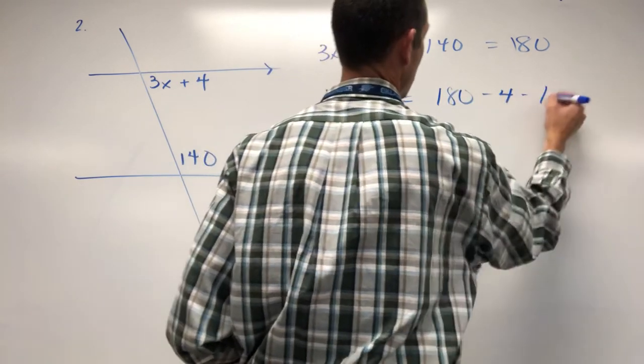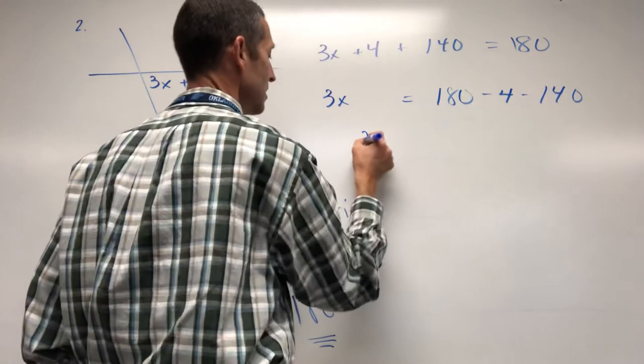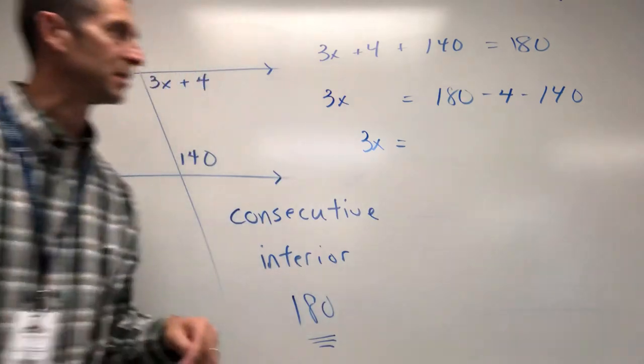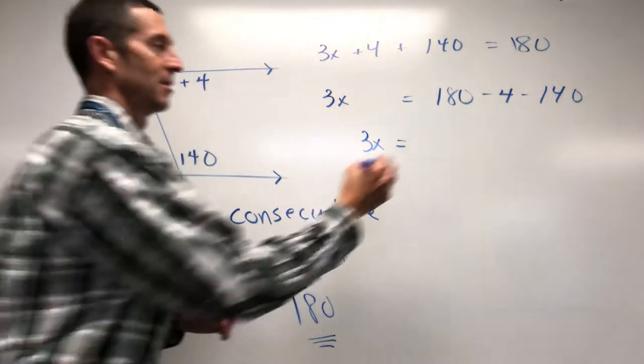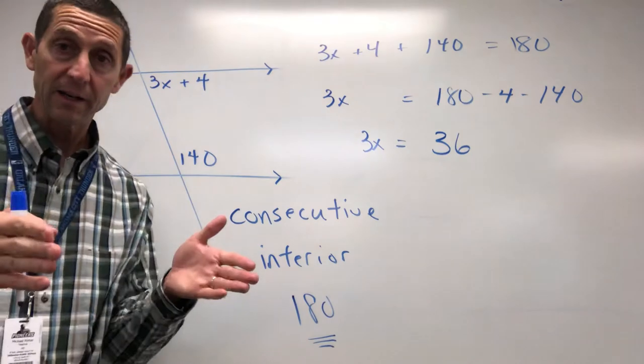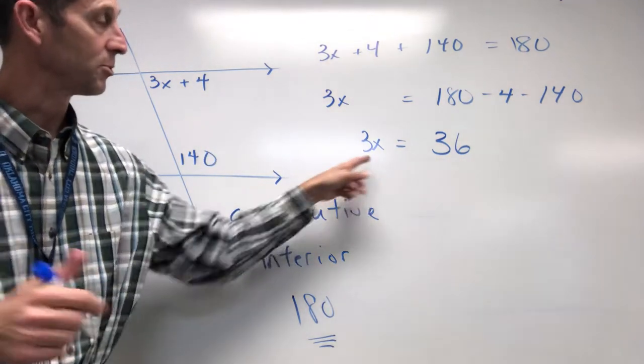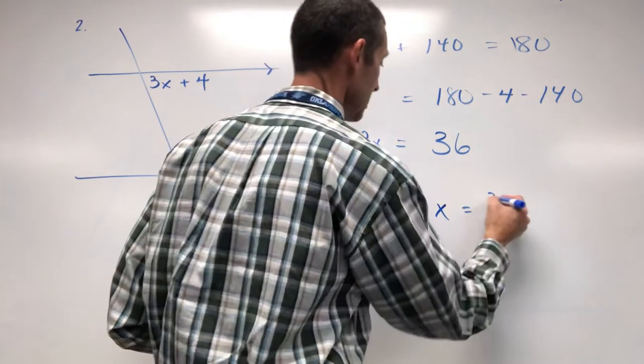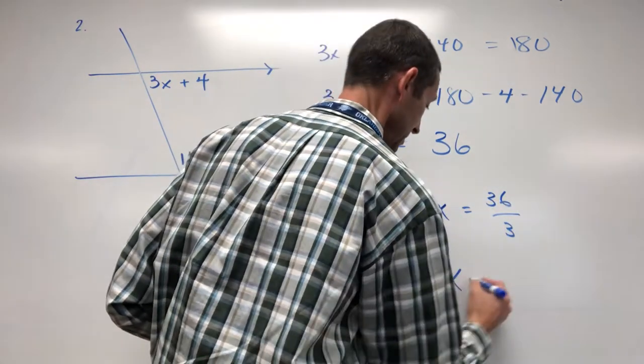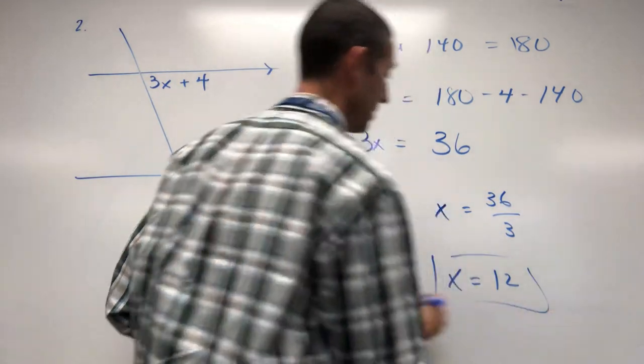Let's subtract the 4, subtract the 140. What is that? 40 minus 4, 36. So consecutive angles, boom, add them up to 180. Run some algebra. Looks like we're close on this one. I just got 36 divided by 3. x equals 12.